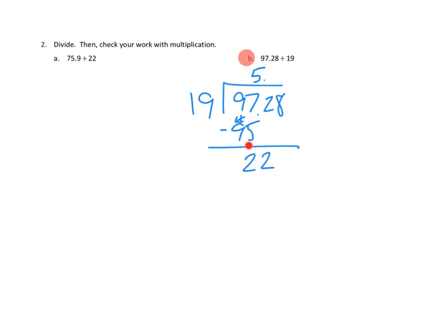If we had 22 tenths and we tried to make a group of 19, we could make one. We'll make one group of tenths. So 1 times 19 is 19. And I find that I've used up all but 3 of our tenths.